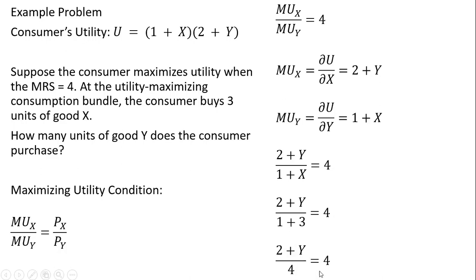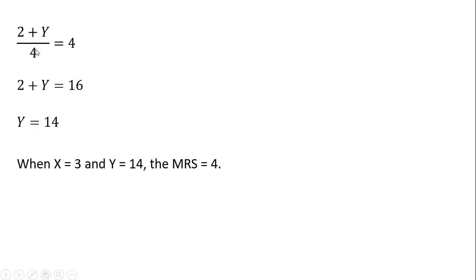So 1 plus 3, we get 4 down here. And then just rewriting that last result, and then 4 times 4, multiplying everything through by 4, we get 2 plus Y equals 16.